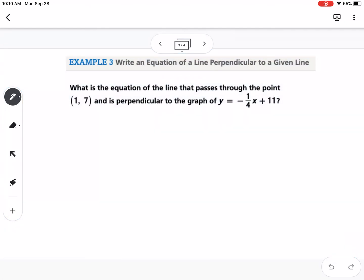Okay, our next example is very similar. So it says, what is the equation of the line that passes through the point (1, 7) and is perpendicular to the graph of y equals negative 1/4 x plus 11?